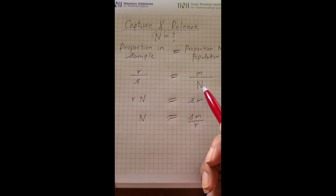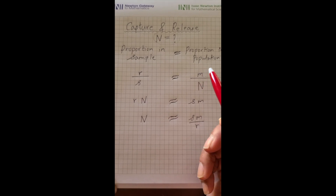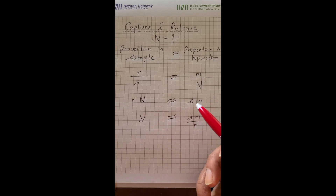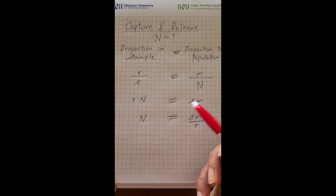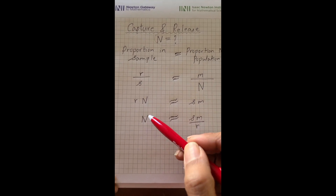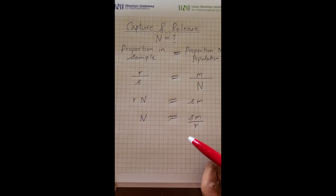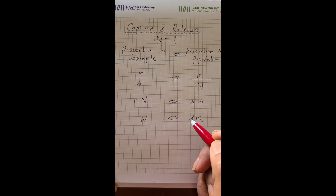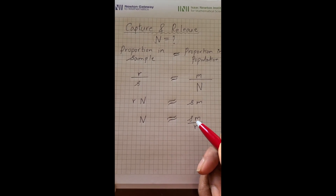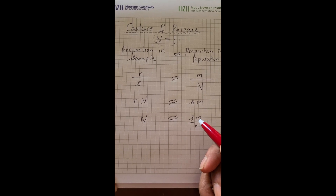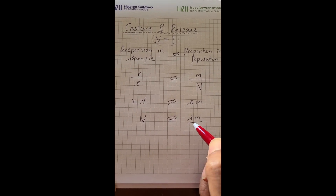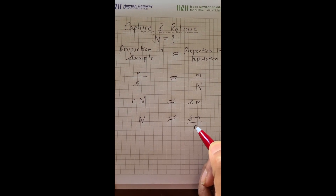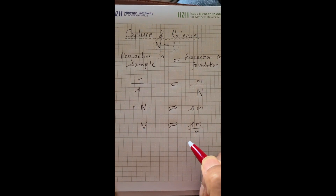Now we have the simple equation: R over S equals M over N. There are four quantities and the only one we don't know is N — all the remaining three can be computed. Cross-multiplying gives R times N equals S times M, from which we get the formula N is approximately S times M over R. Here S is the sample size drawn from the randomized pool, M is the number of marked beads in the population, and R is the number of marked beads found in the sample of size S.